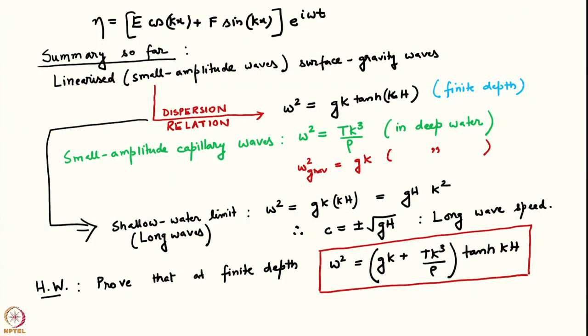One important difference is that the shallow water limit and the deep water limit are qualitatively different. In deep water, waves are dispersive — the phase speed is a function of wave number k. Whereas in the shallow water limit the waves are non-dispersive; cp is a constant and not a function of k. As a homework exercise, you can prove that if you have both capillarity and gravity present in a pool of finite depth, one would recover a combined dispersion relation using whatever we have learned so far.